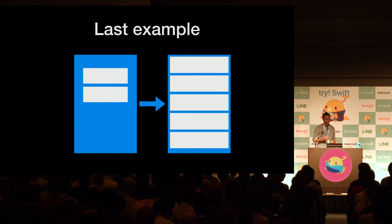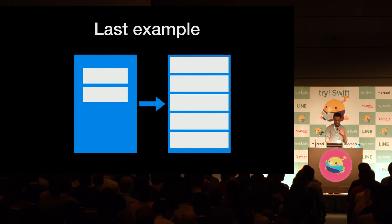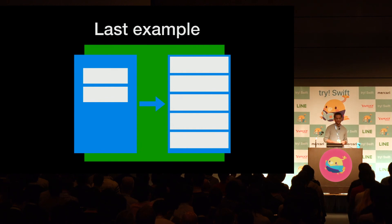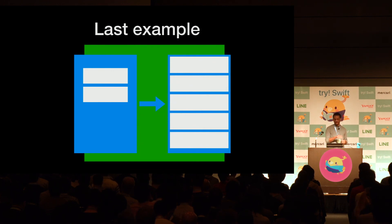Hiding content behind a login is a common pattern in iOS apps. To implement this, I like to make a parent view controller responsible for deciding to show the login form or the app's actual content. This parent controller is in the responder chain, so you can send the logout message through the responder chain instead of your various controllers needing a reference to the parent controller.